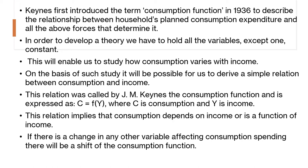If there is a change in any other variable affecting consumption spending, there will be a shift in the consumption function. For example, if there is a favorable factor and there is an increase in consumption, the consumption function would shift up. Otherwise, if there is a decrease in consumption as a result of a change caused by some other factors, the consumption function would shift down.